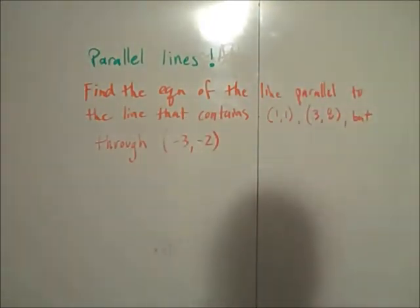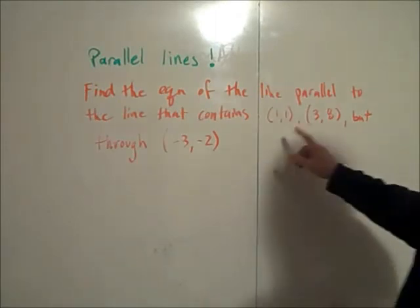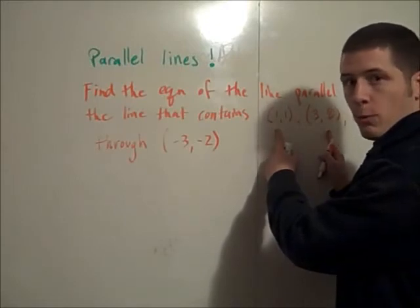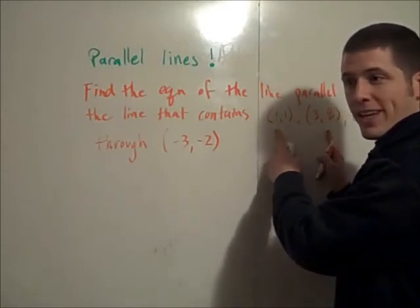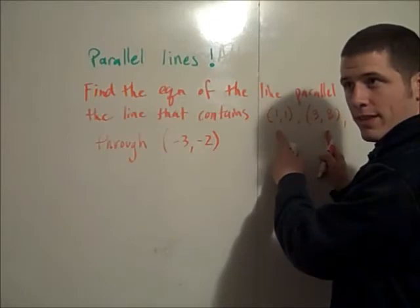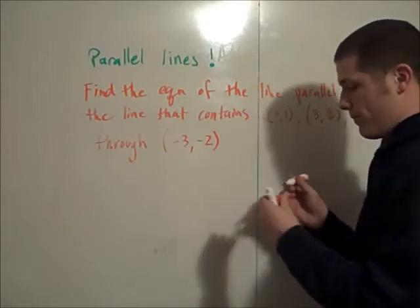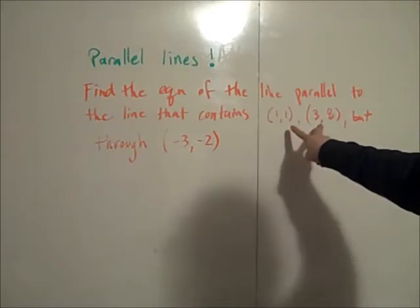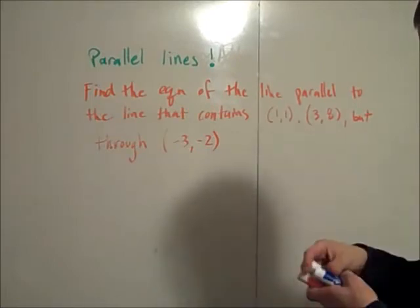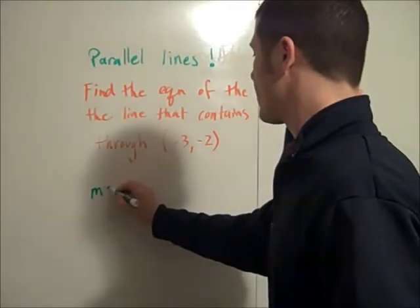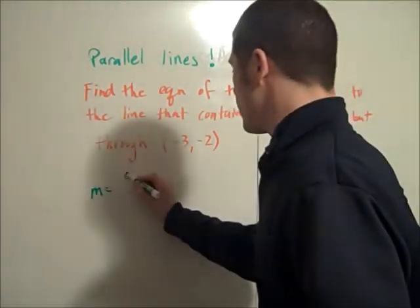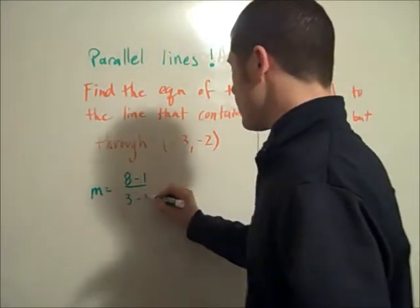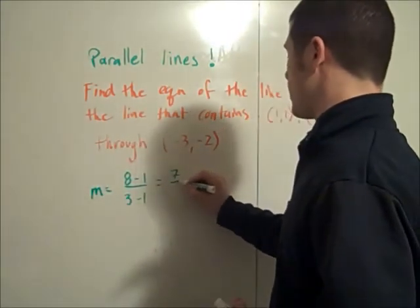Okay so conceptually what we have going on here is we have two points that determine a line and we're going to find the line that's parallel to the line determined by these two points but through this point. So the first thing we're going to do is find the slope of our line which is going to be the same as the slope of this line. So the slope m is going to be 8 minus 1 divided by 3 minus 1. So this is 7/2.